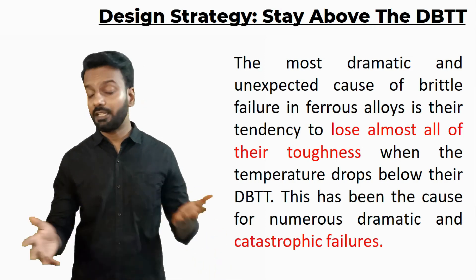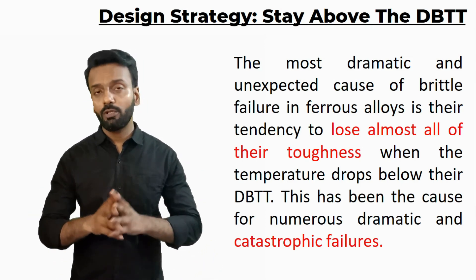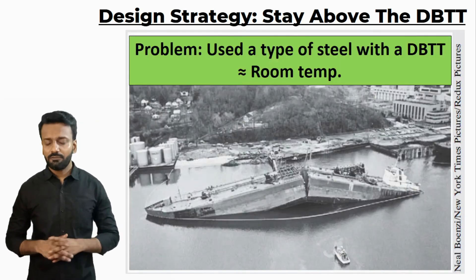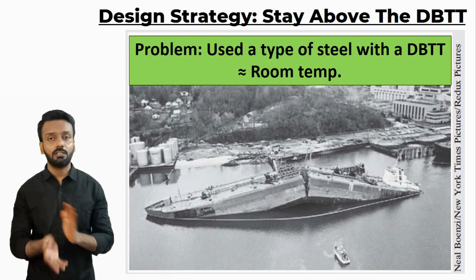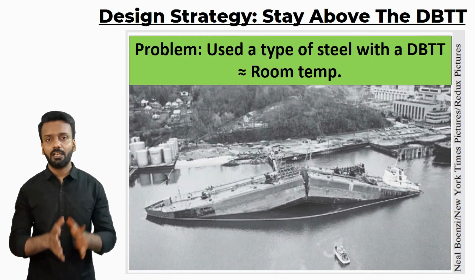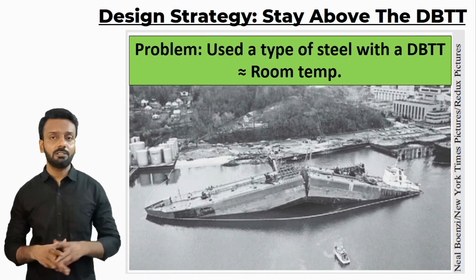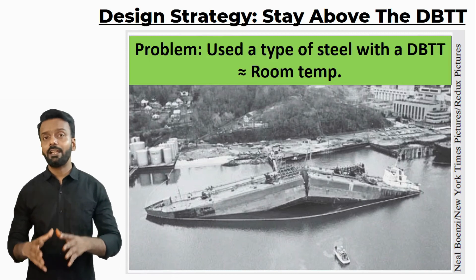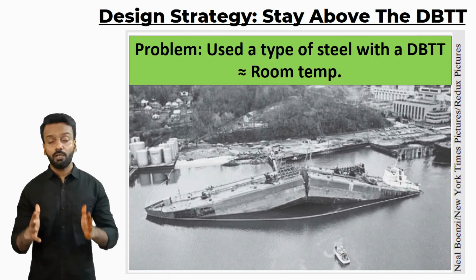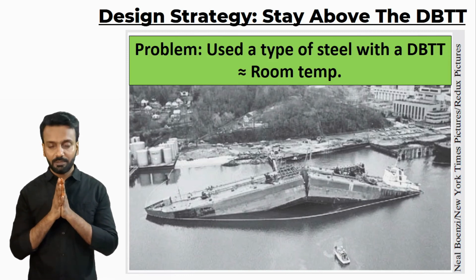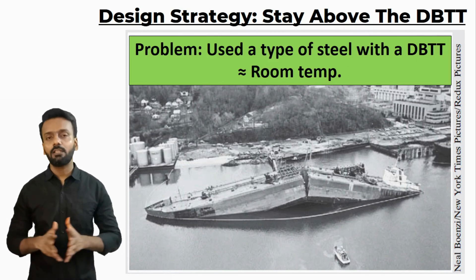You should establish that this material will only function properly within a certain temperature range — as you decrease the temperature the material might change from ductile to brittle nature and fail. This should be your design strategy. In the past we have seen many examples where material suddenly changed from ductile to brittle behavior. This is a typical example of a ship whose material changed from ductile to brittle as soon as the temperature dropped, causing the ship to be torn apart in two pieces with catastrophic effect.